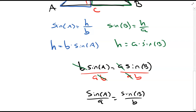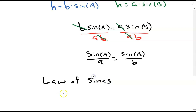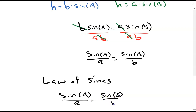I would then repeat this same process drawing in another altitude. Depending on which altitude I draw, I'd get either sine A over a equals sine C over c, or sine B over b equals sine C over c. Taking both proportions and linking them through the transitive property gives us the complete law of sines: sine A over a equals sine B over b, which equals sine C over c.